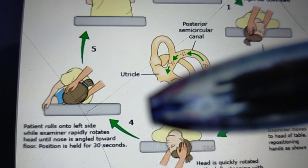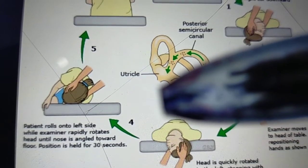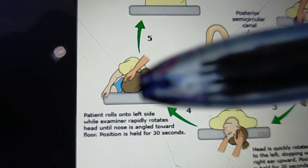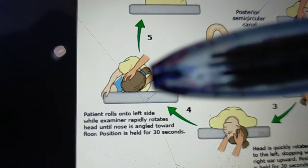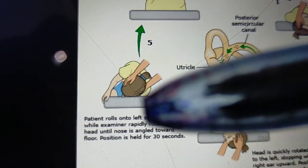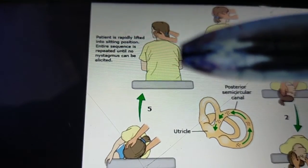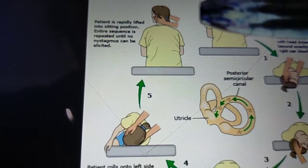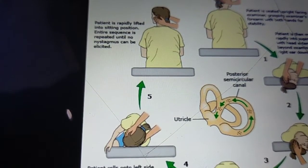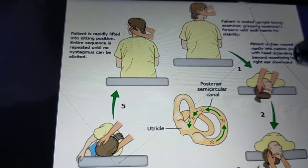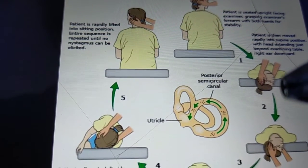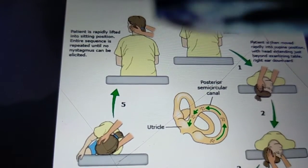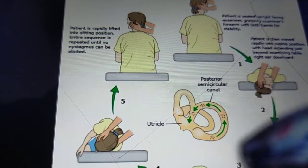Then turn the patient's body also toward the same side, and flex the patient's legs, preparing the patient to come out of the bed into a sitting position. Slowly place the patient's legs on the ground and bring them back to the sitting position, keeping the head in the same position. Then gradually return the patient's head to the center. Each position should be maintained for about 30 to 60 seconds, and the entire procedure may take about 5 to 10 minutes.